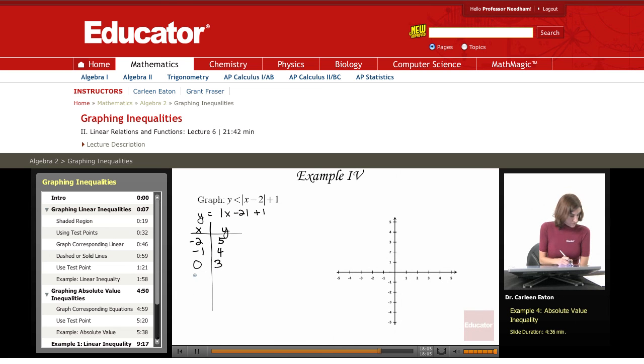Now some positive numbers. 1 minus 2 is negative 1, absolute value is 1, plus 1 is 2. 2 minus 2 is 0, plus 1 is 1.